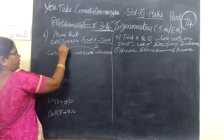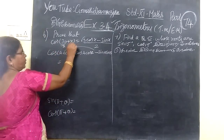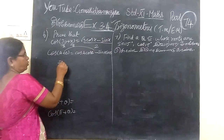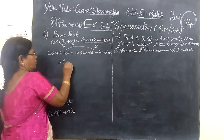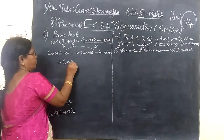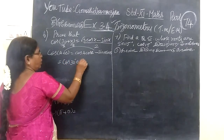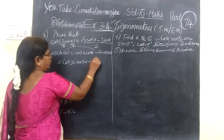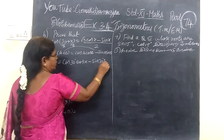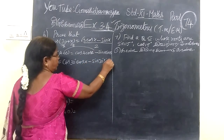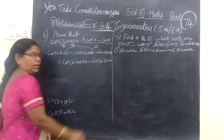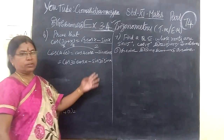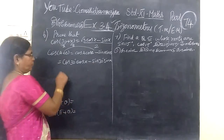So in the place of A we have 30, and in the place of B we have x. For cos A we put 30 degrees, then cos B is x, sin A is 30 degrees, then sin B is x. So A value and B value is substituted.